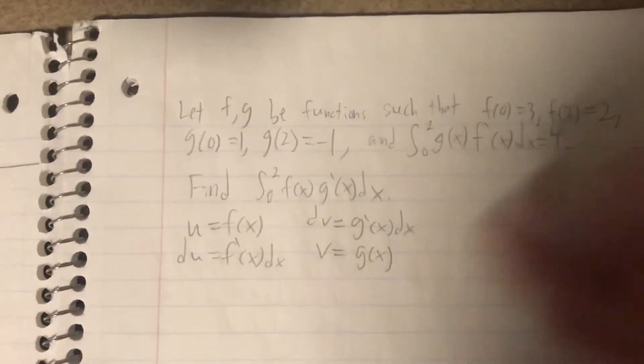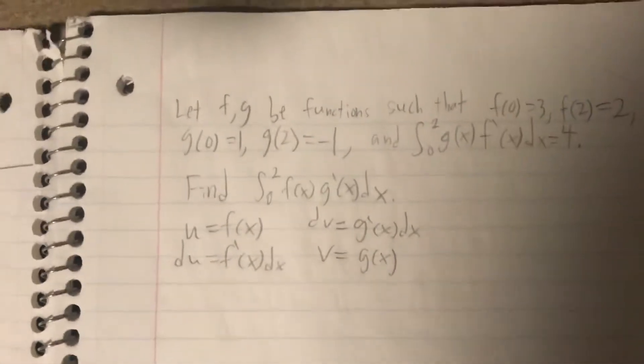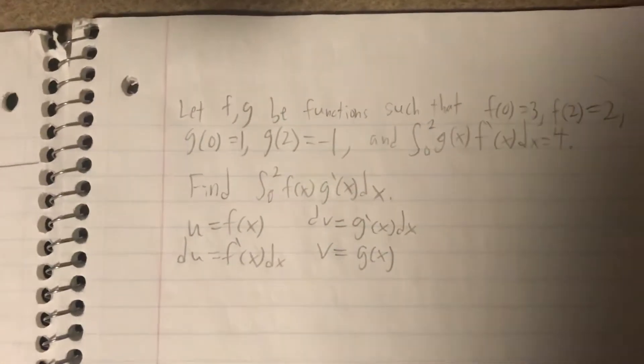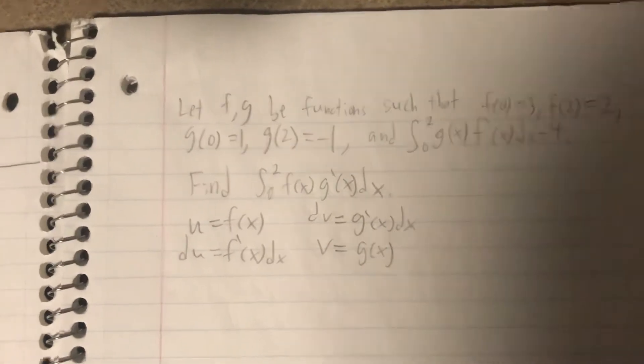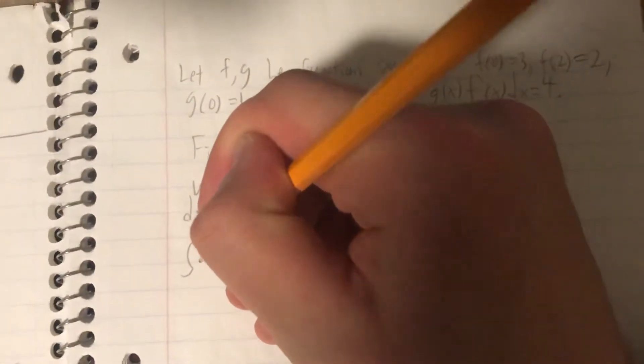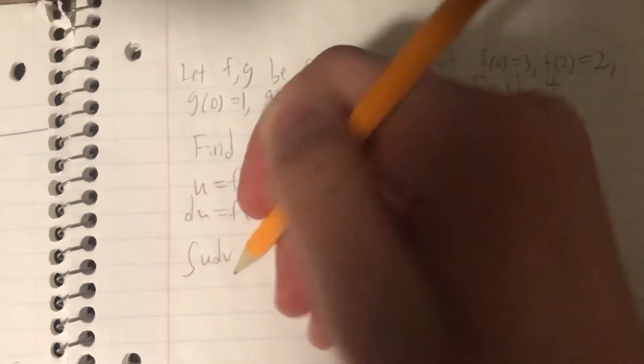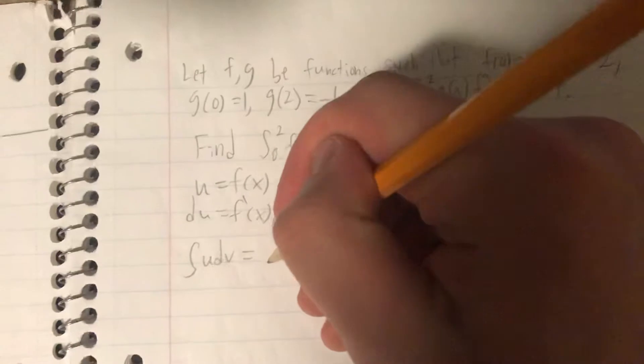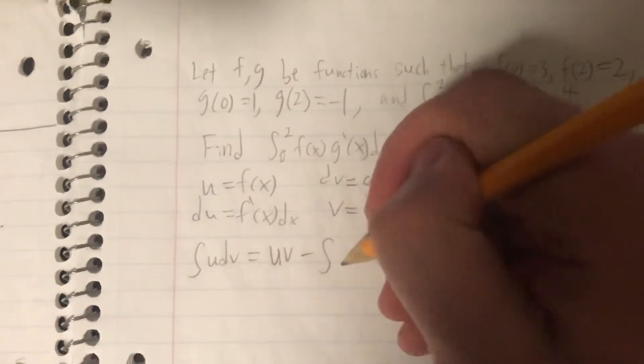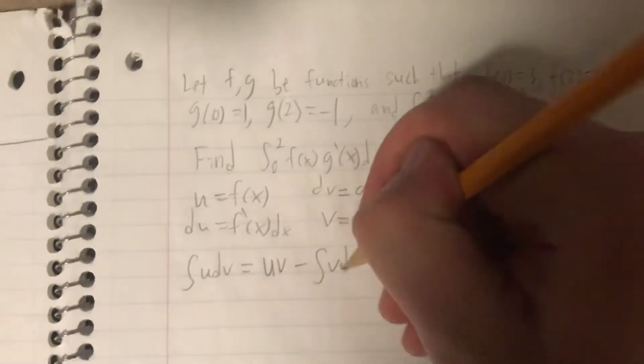Now, to continue along with the integration by parts method, let's actually write out the formula for this. So, of course, the integral for, as you should know, the integral of u times dv, with an integration by parts method, is going to be equal to uv minus the integral of v with respect to du.